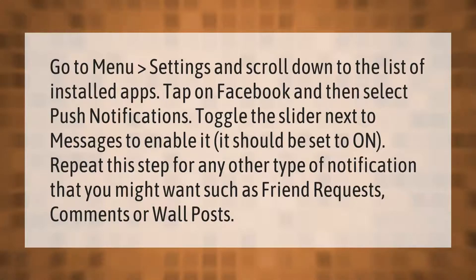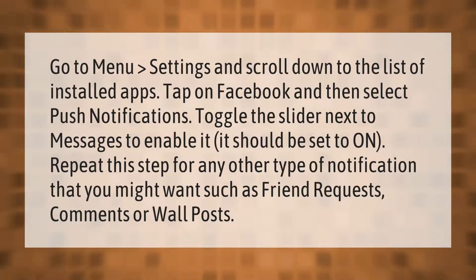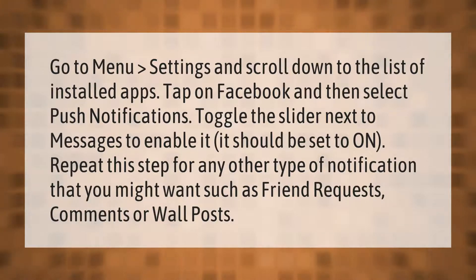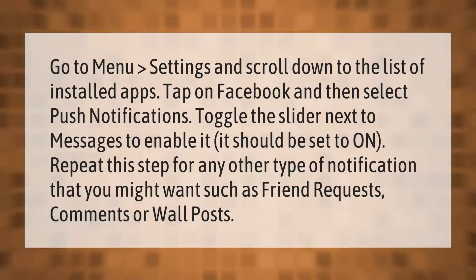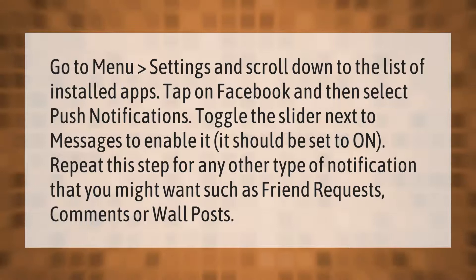Go to Menu, Settings, and scroll down to the list of installed apps. Tap on Facebook and then select Push Notifications. Toggle the slider next to Messages to enable it — it should be set to On. Repeat this step for any other type of notification that you might want, such as friend requests.